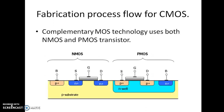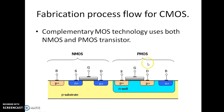This is the circuit diagram of the CMOS — this is the NMOS transistor and this is the PMOS transistor. We know both NMOS and PMOS transistors consist of four terminals. The names of the terminals are: body, source, gate, and drain — and it repeats for the PMOS transistor: body, drain, gate, and source.